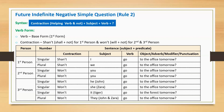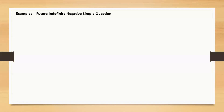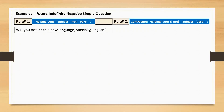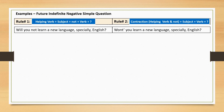In the next slide, I will compare rule 1 and rule 2 with examples. Rule 1: 'Will you not learn a new language, especially English?' This sentence starts with helping verb 'will', followed by subject 'you', negative word 'not', main verb 'learn', and a question mark. Rule 2: 'Won't you learn a new language, especially English?' — beginning with contraction 'won't', followed by subject 'you', main verb 'learn', and a question mark.